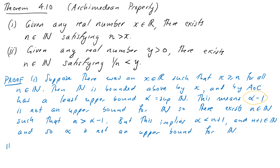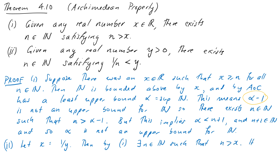For part 2: given any positive real number y, we want to find n such that 1/n < y. We just set x = 1/y. Then by part 1 there exists n in the naturals such that n > x = 1/y. It follows that 1/n < 1/x = y — they're both positive so our inequality theorems guarantee this. Part 2 is essentially just piggybacking on the work we did in part 1.